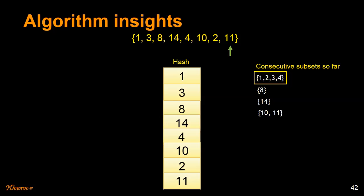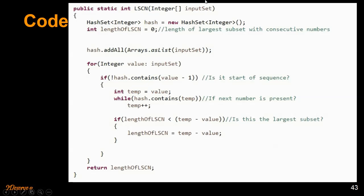Let's quickly look at the code. The function takes in the input set and adds all numbers into a hash. Once all numbers are in the hash, we go through the input set one by one, pick a value, and check if a sequence starts at that value by decrementing by 1. If a sequence starts there, we find the whole sequence in a loop. Once at the end of the sequence, we check if it is the largest found so far and store it. Please have a look at the GitHub link provided.